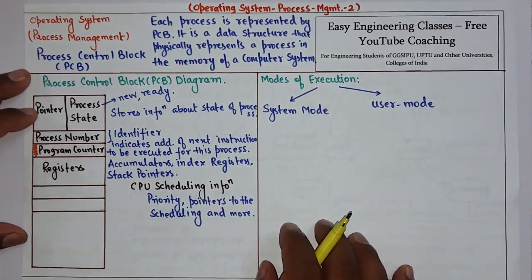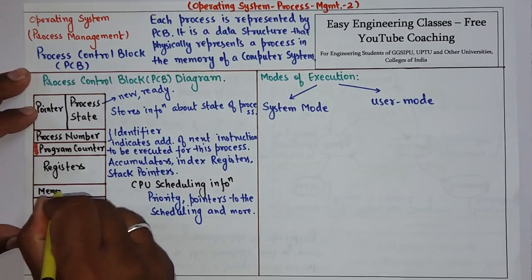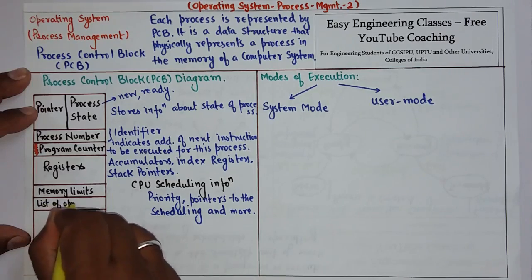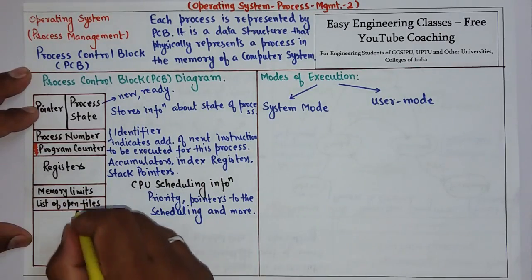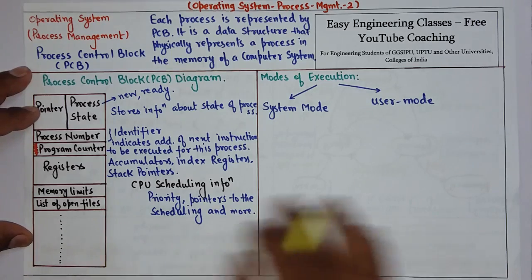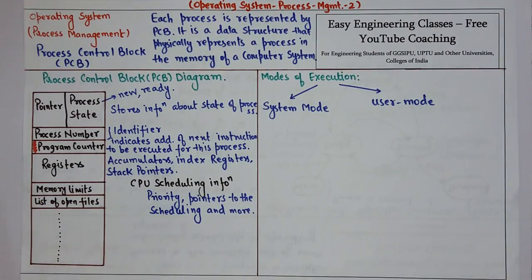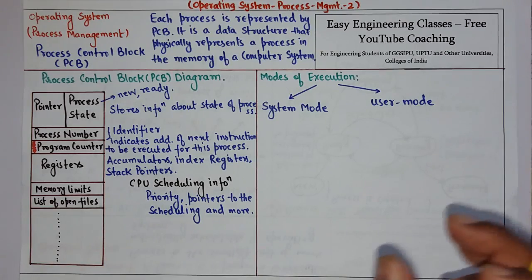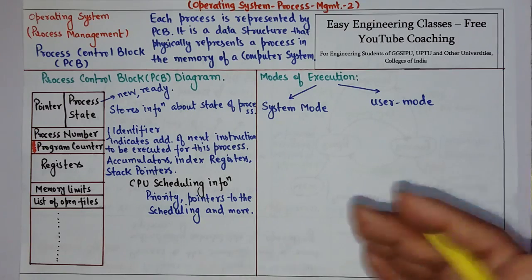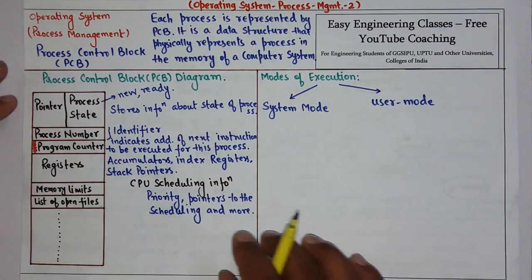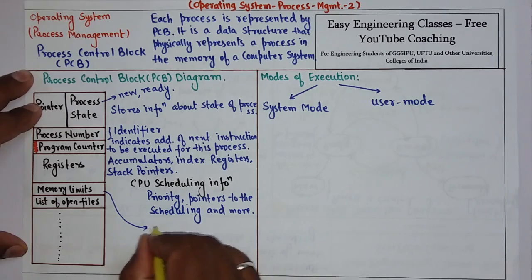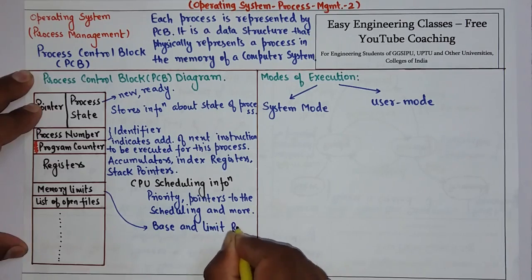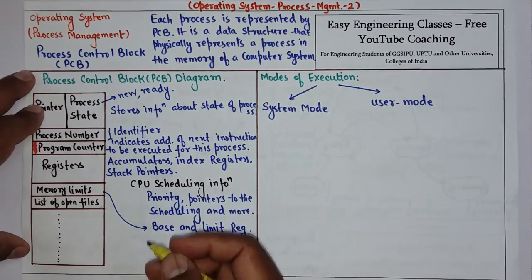The PCB also contains memory management information such as memory limits and a list of open files with details of files currently used by the process. Memory limits refer to values of certain registers such as base and limit registers, as well as paging tables, segmentation tables, and all such information stored in the memory limit portion.